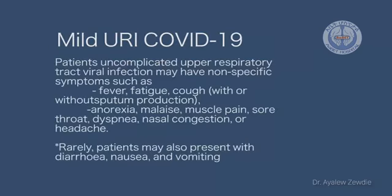The mild URI COVID-19 classification: the patient could have uncomplicated upper respiratory tract viral infection with non-specific symptoms like fever, fatigue, and cough — with or without sputum production — anorexia, malaise, muscle pain, sore throat, dyspnea, nasal congestion, or headache. Patients could also have diarrhea and vomiting.